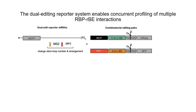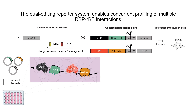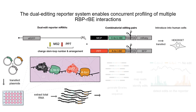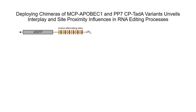The distinct C-to-U and A-to-I edits can further be leveraged to profile the binding of two distinct RBPs with the same RNAs simultaneously. This is significant because traditional RBP interaction profiling methods examine one RBP at a time and often eliminate non-protein-bound parts of the RNAs with RNase treatment. Our dual editing reporter system, by contrast, allows for the concurrent profiling of multiple RBP-RBE interactions without RNase treatment. By deploying chimeras of MCP fused to APOBEC1 and PP7-CP fused to TadA variants, together with a reporter mRNA bearing MS2 and PP7 coat protein binding sites, we can unveil the interplay of binding between the two RBPs by examining the distribution of C-to-U and A-to-I edits in the reporter.